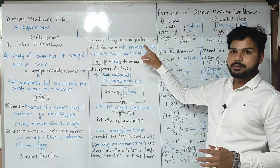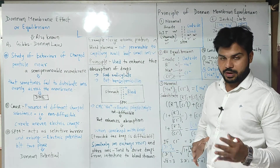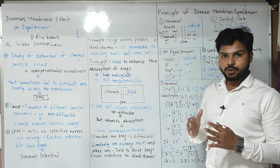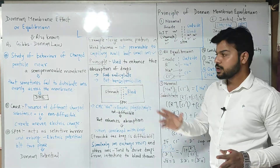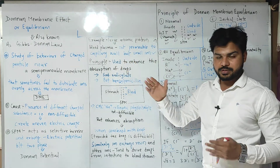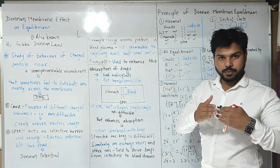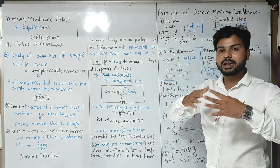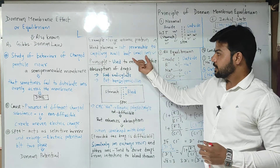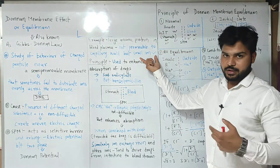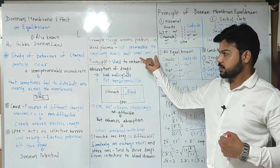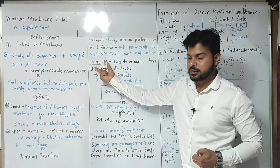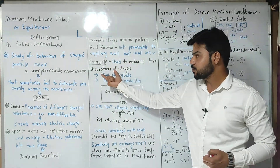For example, large anionic proteins in blood plasma are not permeable to the capillary wall — meaning they cannot cross from the blood vessels to the capillary wall because of their large size. Small ions, however, can cross the membrane. This principle is used to enhance the absorption of drugs.